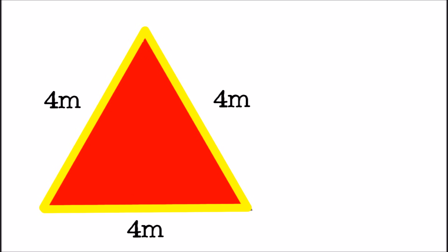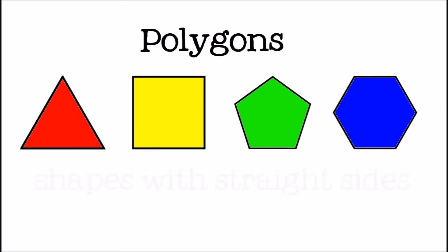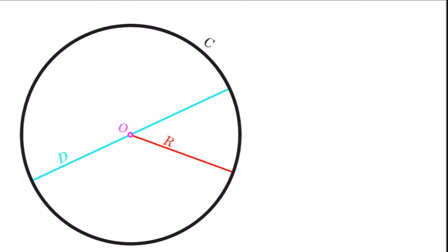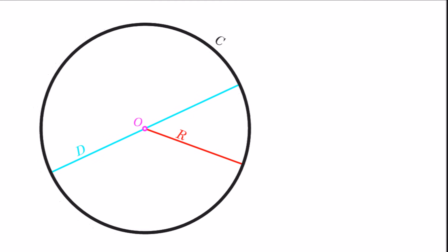We are going to discuss how to find the perimeter of polygons, which are shapes with straight sides. There are special rules for finding the distance around round shapes, like circles, which we will talk about another time.